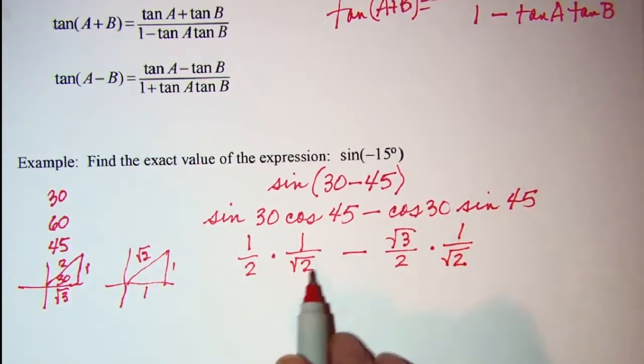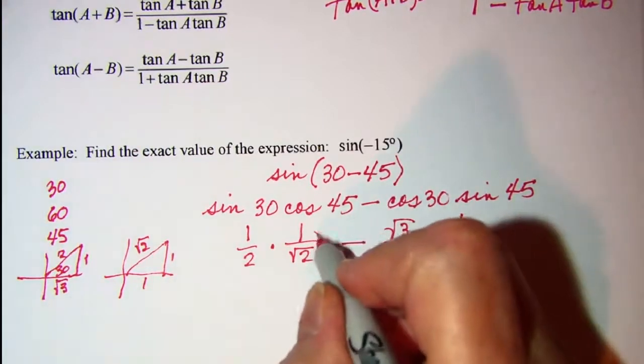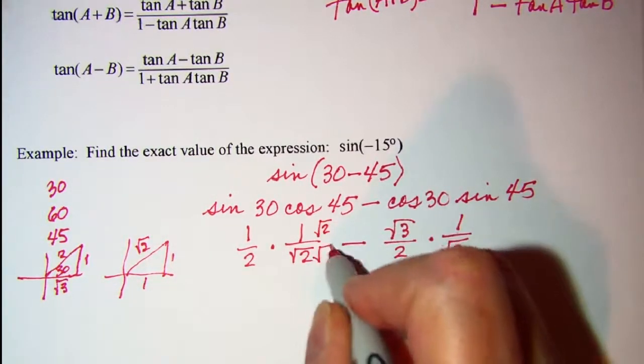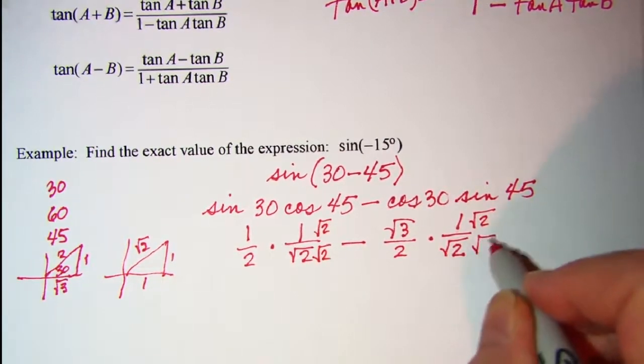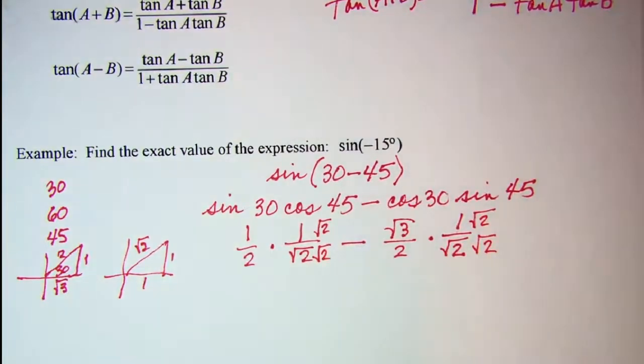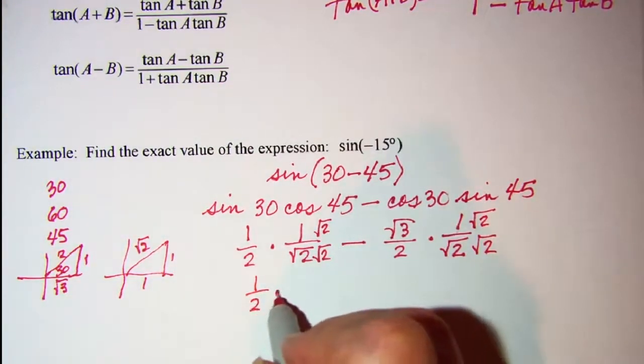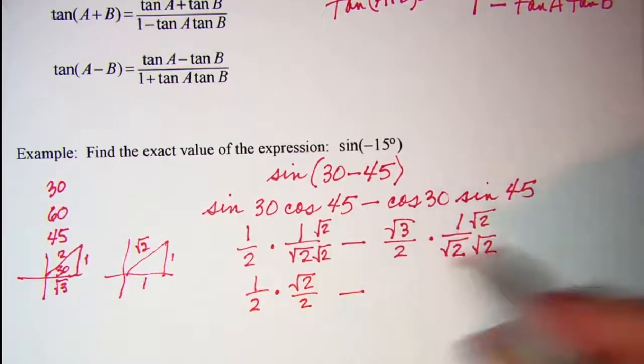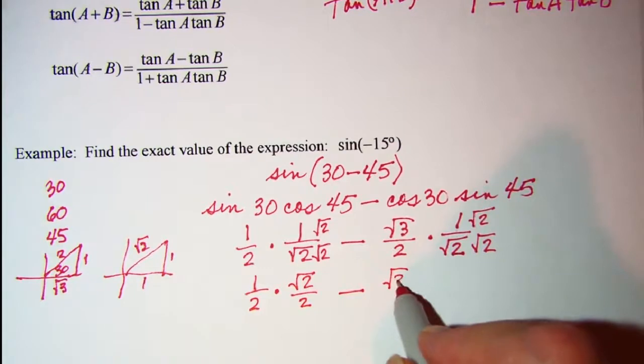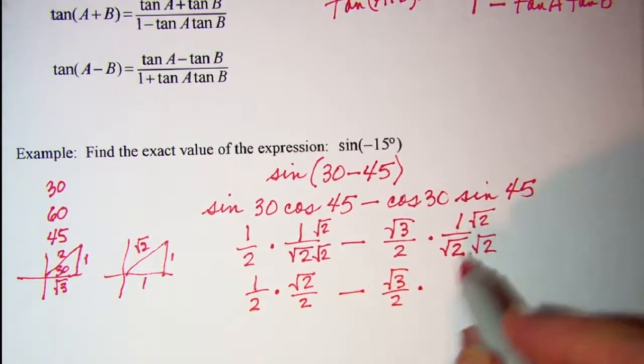I'm going to rationalize these fractions with radicals in the denominator. So I'll multiply top and bottom by the radical. So we now have 1 over 2 times root 2 over 2, subtract, and then root 3 over 2 times root 2 over 2.